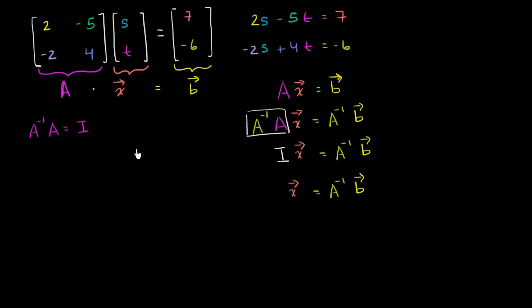So now let's actually do that. Let's actually figure out what A inverse is, and multiply that times the column vector b to figure out what the column vector x is, and what s and t are. So A inverse is equal to one over the determinant of A. The determinant of A for a two-by-two here is going to be two times four minus negative two times negative five. So it's going to be eight minus positive ten, which would be negative two.